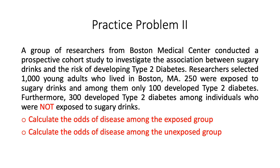Practice problem number 2 uses the same scenario: researchers from Boston Medical Center conducted a prospective cohort study on sugary drinks and type 2 diabetes among 1,000 young adults. 250 were exposed to sugary drinks and 100 among them developed type 2 diabetes, while 300 developed type 2 diabetes among the unexposed. There are two calculations: calculate the odds of disease among the exposed group, and calculate the odds of disease among the unexposed group.